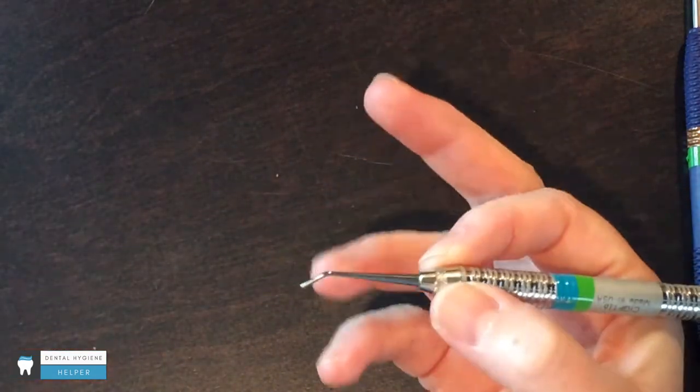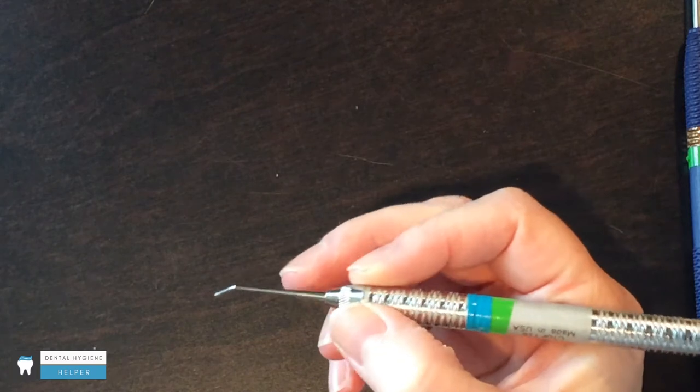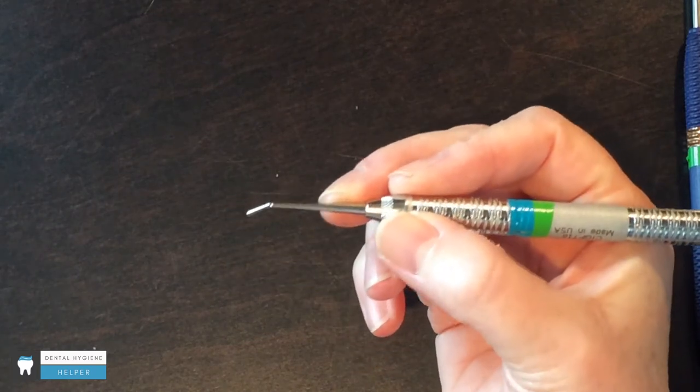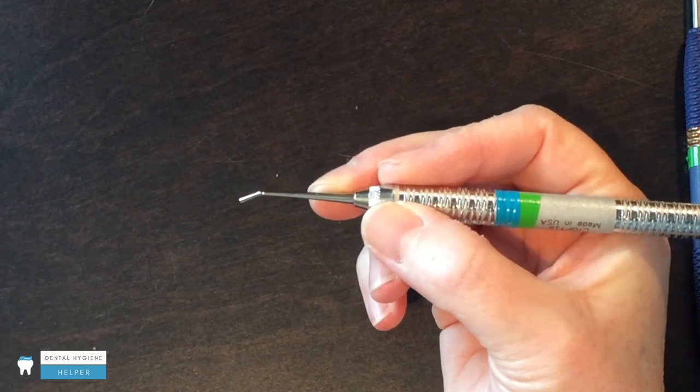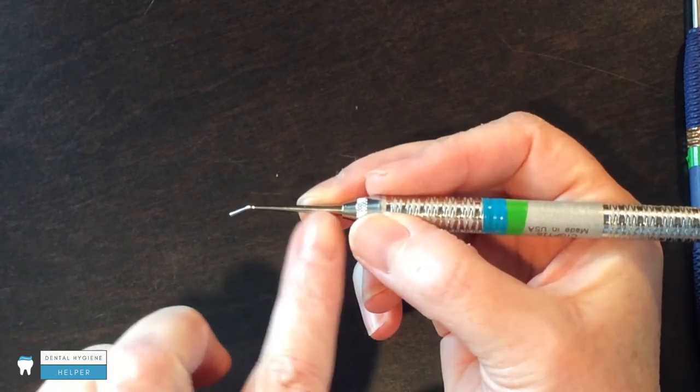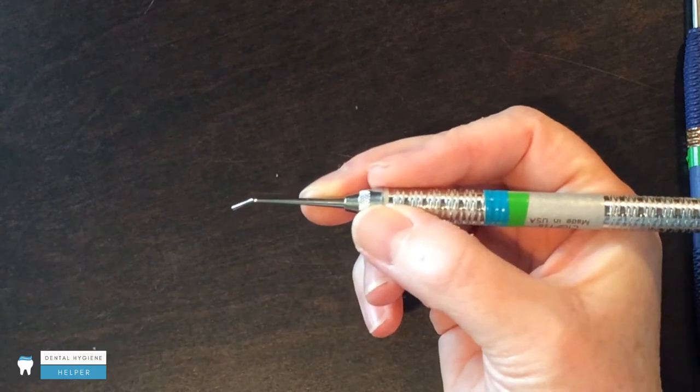Then I'm going to take my third finger and bring that in close to my index finger and rest the side of it against the shank of the instrument. That way the shank will transmit vibrations into this finger.